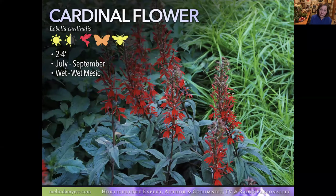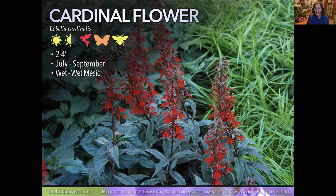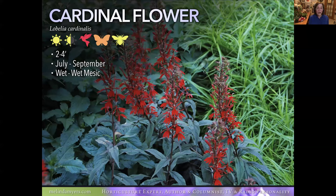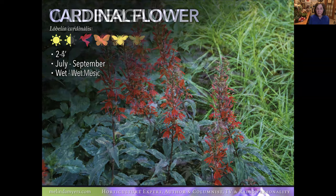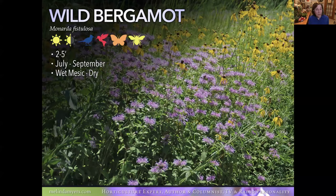Cardinal Flower can take some shade and moist soils, and can grow in water features and rain gardens. Finding the right spot for it is always a challenge — it tends to be short-lived but does some reseeding, so watch for little seedlings. Those spires of red flowers are unmatched in the garden — mid to late summer, beautiful, and hummingbirds love them as well as pollinators.